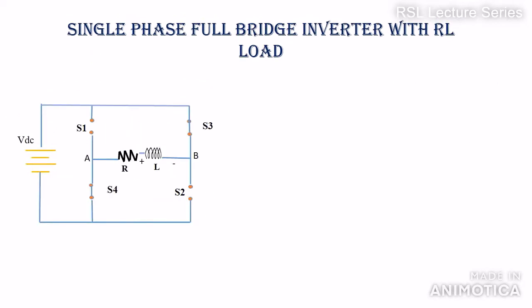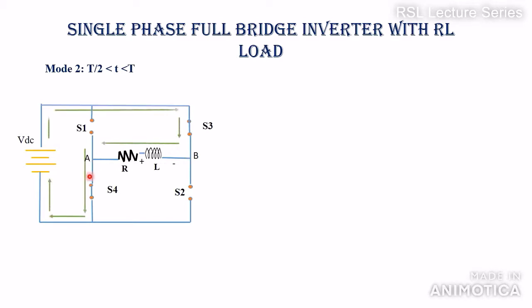Mode 2 operation is from T/2 to T. At t = T/2, switches S3 and S4 are turned on. Current flows from VDC positive through S3, through the load — this time from terminal B to A (reverse direction compared to mode 1) — then through S4, completing the path through VDC negative. Terminal A is connected through S4 to the negative terminal, and terminal B through S3 to the positive terminal. So the load voltage V0 = −VDC, and the current flows in the reverse direction.